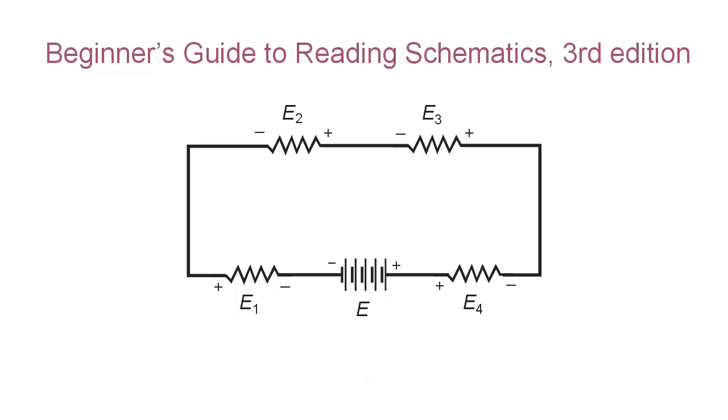And that is a principle known as Kirchhoff's voltage law. Kirchhoff's voltage law simply says that if you add up the voltages of all the resistances in a closed circuit like this, you're going to get the same voltage as the battery. Another way of saying that is if you do take polarity into account.